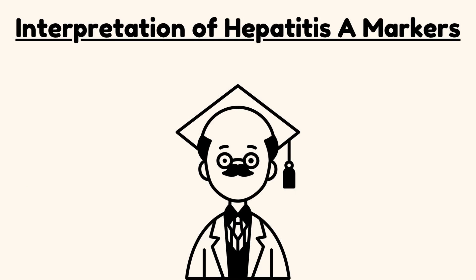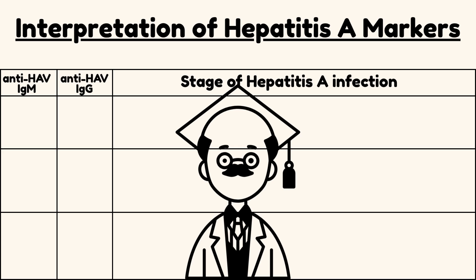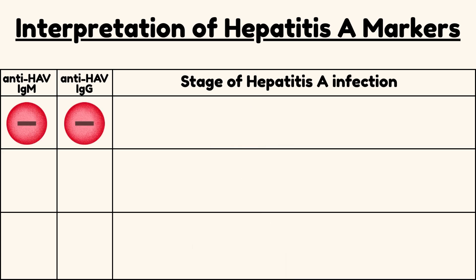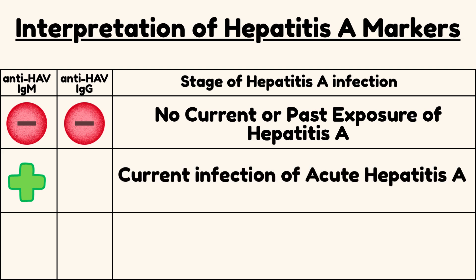What is the interpretation of Hepatitis A markers? Now let's interpret these markers. If both IgM and IgG are absent, there is no current or past exposure to Hepatitis A. If IgM is positive, it signals a current infection of acute Hepatitis A.